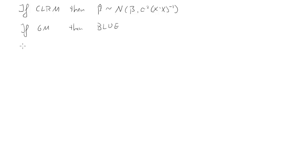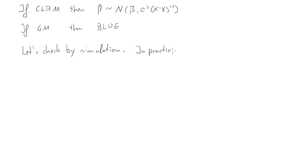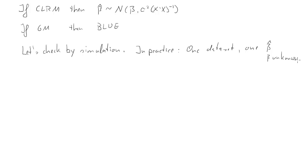What we now want to do is check what these properties mean, and we do that by simulation. In practice, all you have is one data set, and from that one data set you can estimate one particular value for beta hat. Of course the true value of beta is unknown — beta is the true population parameter.